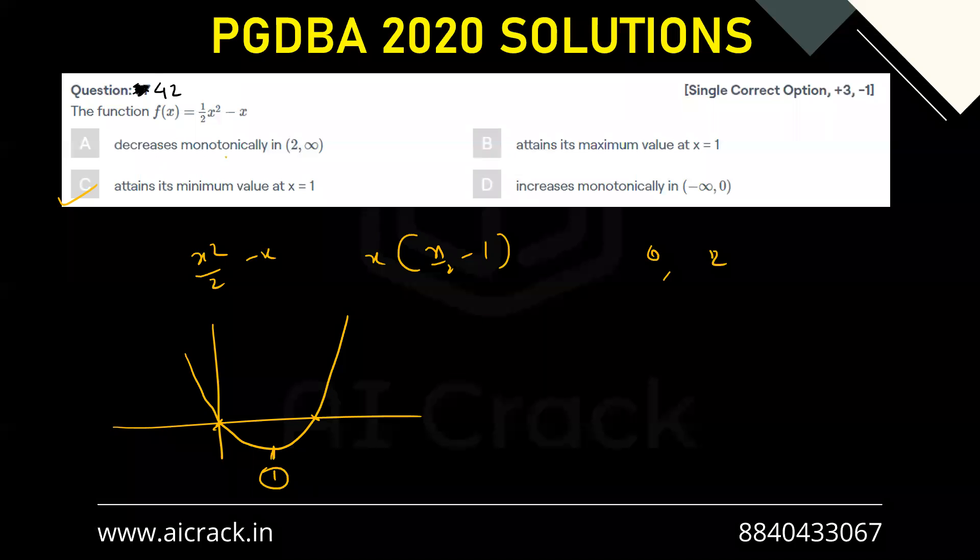Decreases monotonically in (2, ∞). This value is 2, but it is increasing from 2 to infinity, right? So that is not correct.